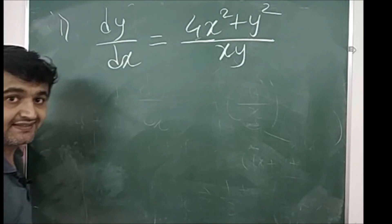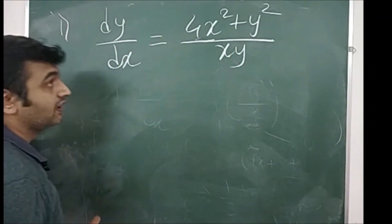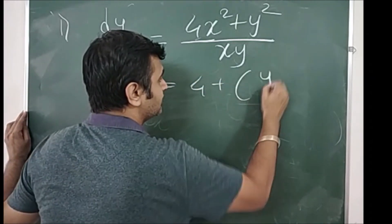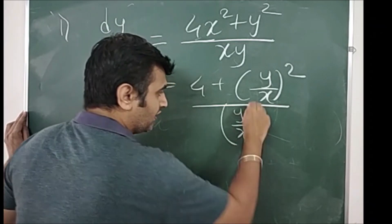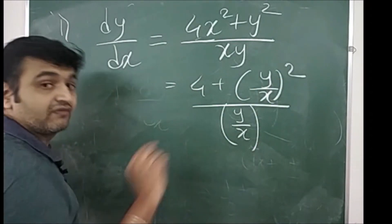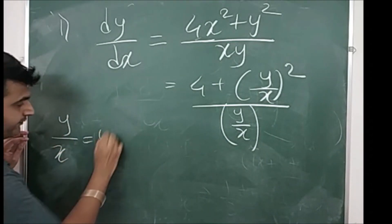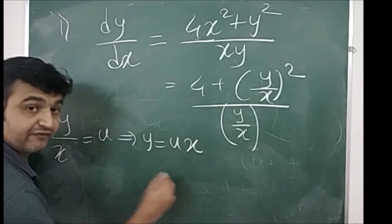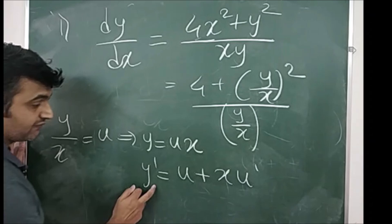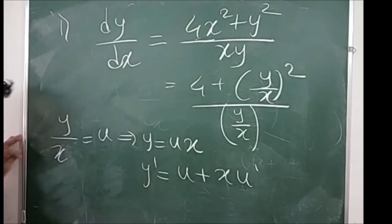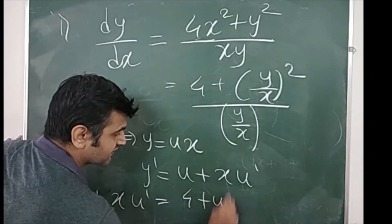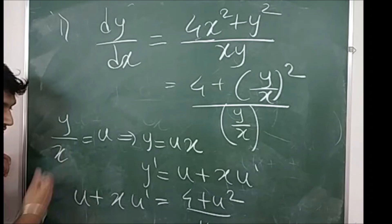Let me take an example: dy/dx = (4x² + y²) / (xy). Can you write this in terms of y/x? Yes — dividing numerator and denominator by x², this becomes (4 + (y/x)²) / (y/x), which is purely a function of y/x. Now put y/x = u, so y = ux. Differentiating: u + x·du/dx = y'. Substituting into the equation gives u + x·du/dx = (4 + u²)/u, and rearranging yields a variable separable equation.